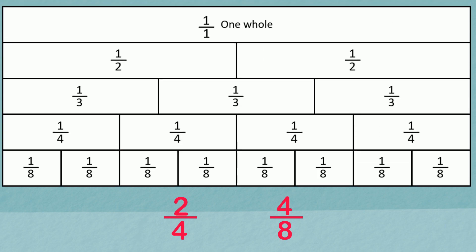Let's have a look at these two fractions, two quarters and four eighths, on a fraction wall. Each bar on the fraction wall represents one whole. Each bar is divided into a different number of pieces.